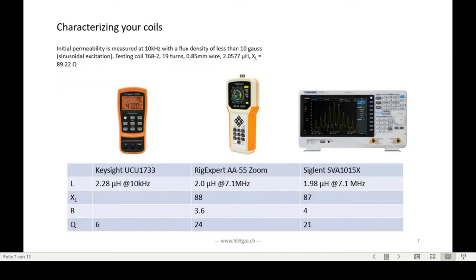I characterize the coil. Usually, I just use the keysight, the UC1733. I measured the coil with this instrument and I get 2.28 microhenrys at 10 kilohertz. It only measures up to 100 kilohertz. These permeabilities are specified at 10 kilohertz. And you see a low Q of 6. If I choose my antenna analyzer, my rig expert, I get an inductance of 2 at 7 megahertz and Q of 24.